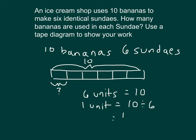I know that ten divided by six is the same as ten over six, which is equal to one and four-sixths, which I can reduce and simplify by dividing by two in the numerator and denominator to one and two-thirds. So there are one and two-thirds bananas within each sundae. Each of those units is one and two-thirds for each of those sundaes. In a complete sentence, that would be each sundae gets one and two-thirds bananas.